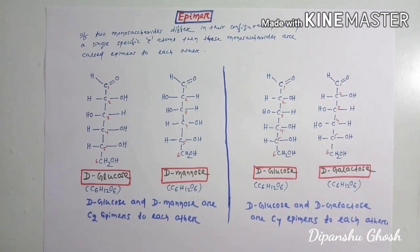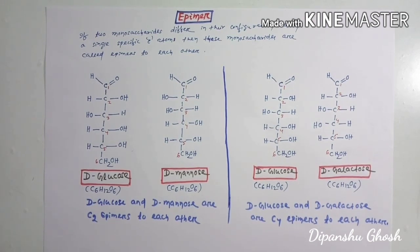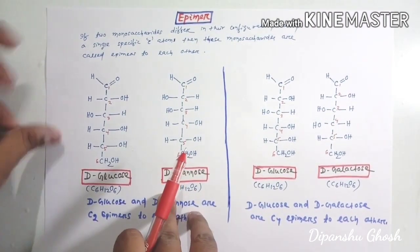To understand this topic better, I have taken three examples: D-glucose, D-mannose, and D-galactose. All three molecules are monosaccharides and all are hexoses, meaning they have six carbon atoms and all have the same molecular formula C6H12O6. I will first compare D-glucose and D-mannose, then compare D-glucose and D-galactose. D-glucose is an epimer to both D-mannose and D-galactose.